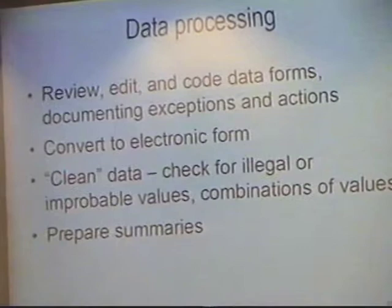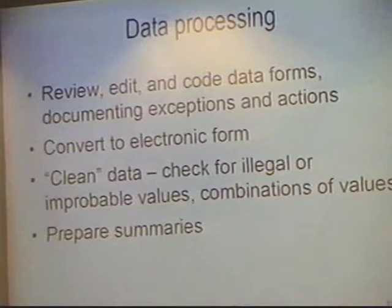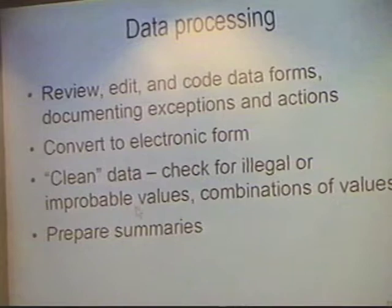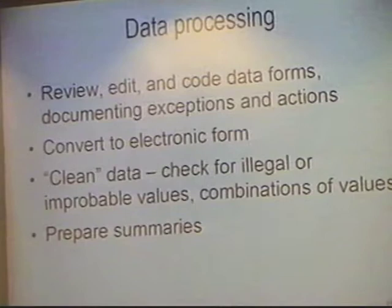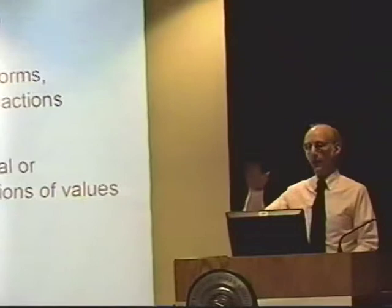The next steps in data management are to review, edit, and code the data forms, and to document the exceptions and the actions that were taken. You often have to clean data because real data comes with imperfections and inconsistencies. You want to check for illegal or improbable values — pregnant men is an example of an illegal value, or people who are seven feet tall but weigh only 100 pounds. You have people go through every data form, and they also go through the computerized data and make cross-tabs and scatter plots to try to find what look like problems. Be a sleuth. Be skeptical. Be looking for problems in the data, and prepare summaries so you can have a sense of what's going on on a larger scale.